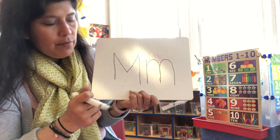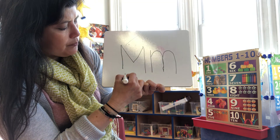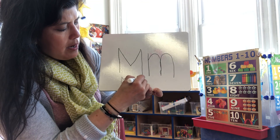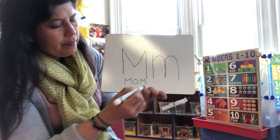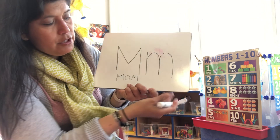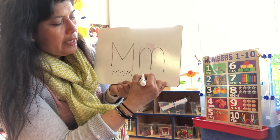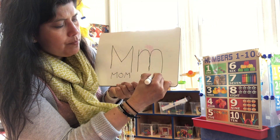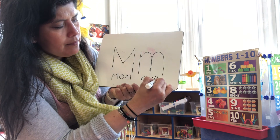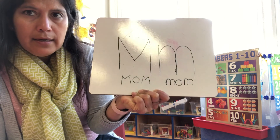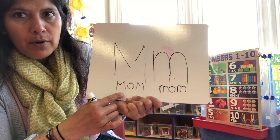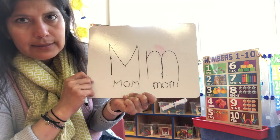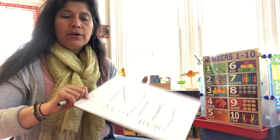M is for mom, so let's spell the word 'mom': M-O-M. There are two M's in 'mom.' If I want to use the lowercase M, I can do it this way — M-O-M. Excellent!